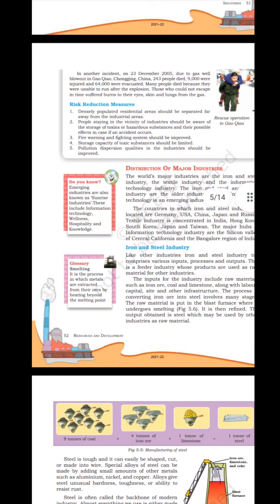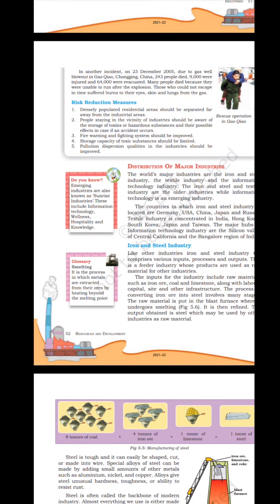In another incident on 23 December 2005, a gas explosion in Gyokhila, Chongqing, China caused 243 deaths, 9,000 injuries and 64,000 evacuations. Many people died because they were unable to run after the explosion. Those who could not escape in time suffered burns to their eyes, skin and lungs from the gas.